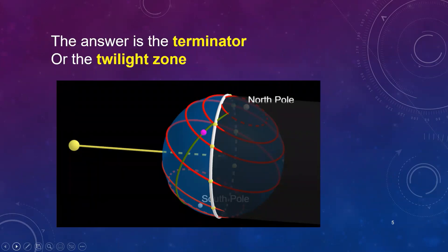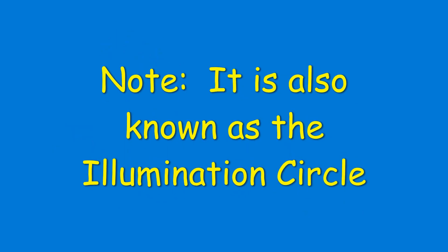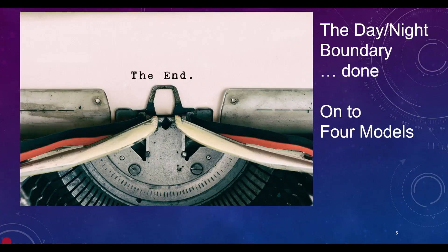The answer is the terminator or the twilight zone. That completes the definition of the daytime nighttime boundary. And next time we'll take a look at four different models.